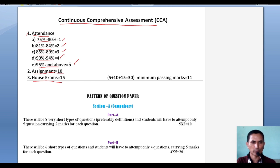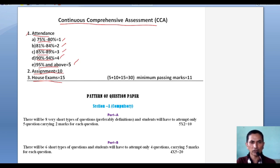The House Exam component is of 15 marks and is organized after 75% of your syllabus is covered. Combining all three components — 5 marks for attendance, 10 marks for assignment, and 15 marks for house exam — gives 30 marks total for CCA. You must score at least 35%, which means a minimum of 11 marks, to pass the CCA component.